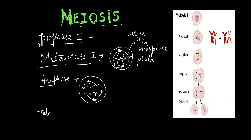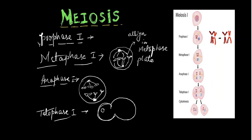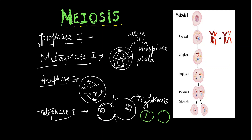Then we have Telophase 1. In Telophase 1, the nuclear membrane reforms and the chromosomes condense. They are ready to divide. Then at last, we have cytokinesis, where the cell divides into two cells. Then it undergoes interkinesis.